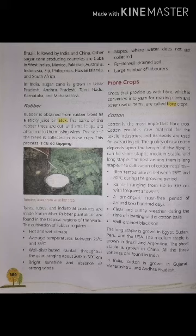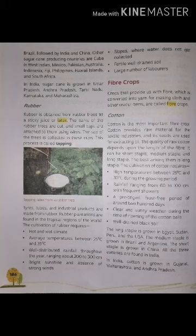The cultivation of cotton requires high temperatures between 25 and 30 degrees Celsius during the growing period, rainfall ranging from 60 to 100 centimeters with frequent showers, a prolonged frost-free period of around 200 days, and clear and sunny weather during the ripening of the cotton bolls.